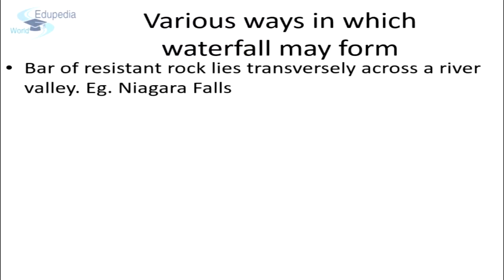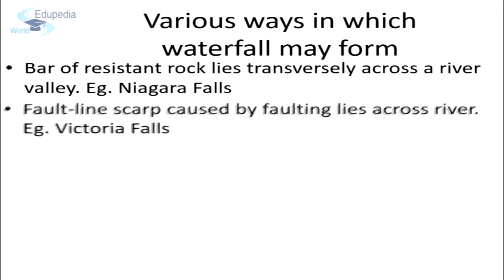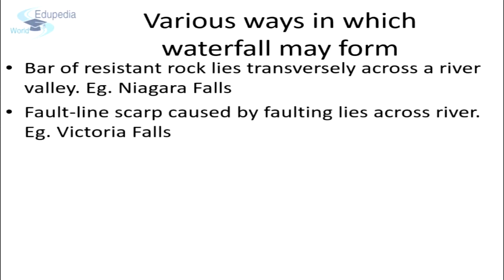First, when a bar of resistant rock lies transversely across a river valley — for example, Niagara Falls in USA, which is 167 feet high. Second, when a fault line scarp caused by faulting lies across the river — an example is Victoria Falls on the river Zambezi, which plunges 360 feet.